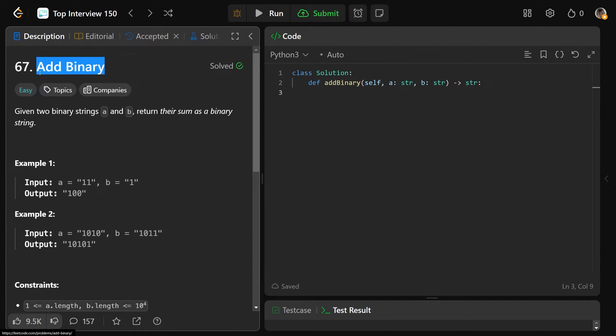Hey guys, Greg here. Let's solve add binary, LeetCode number 67. We're given two binary strings a and b, and we need to return their sum as a binary string.